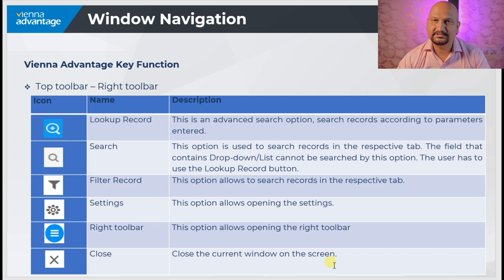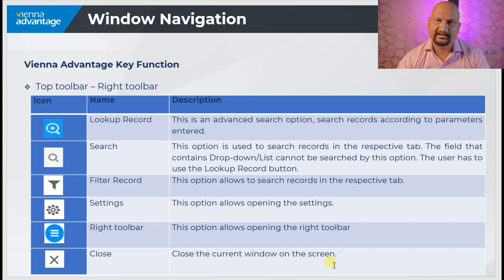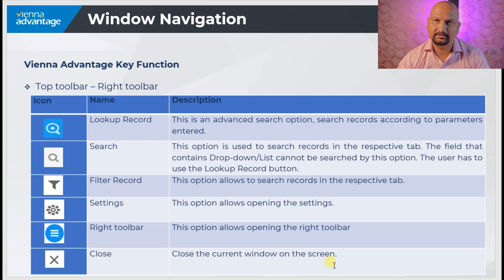Then we have the search button, used to search records in the respective tab. Fields that contain a drop-down list cannot be searched by this option, and checkboxes will never be searched by this option — only fields that are string-based. A user has to use the lookup record if they want to search based on a checkbox or a drop-down.